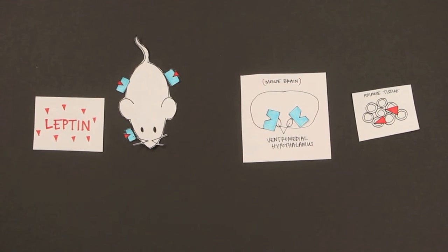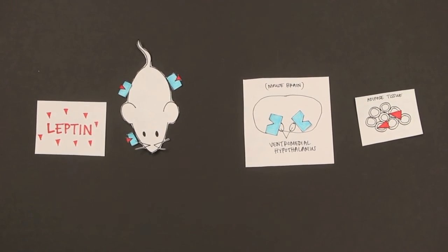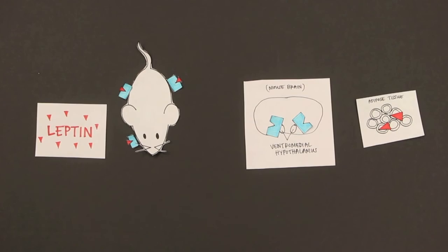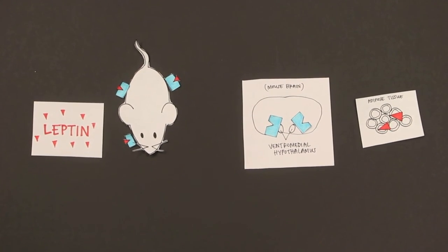Our take home message is that the discoveries of leptin and its receptor provided evidence that fat tissue produces a negative feedback signal for control of food intake and body weight.